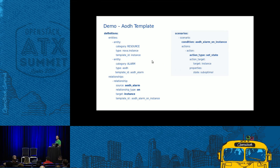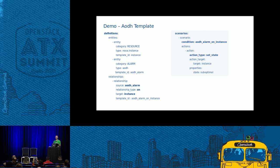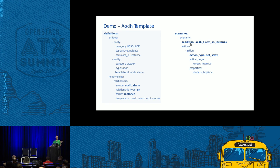Here we can see a template for this kind of AODH use case. Each template consists of two main parts: the definitions part and the scenarios part. The scenarios part defines the business logic in a human-readable way. When we have an AODH alarm on an instance, then set the state of the instance to suboptimal — very easy to understand. The condition string used in the scenarios is defined in the definitions section, which defines the entities and the relationships between them.